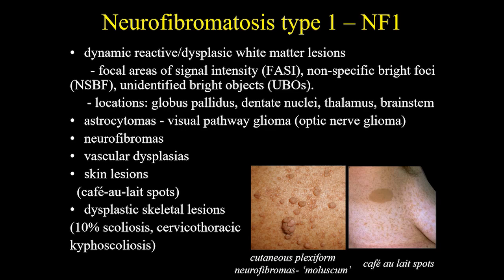There are dynamically reactive dysplastic white matter lesions characterized by focal areas of signal intensity and non-specific bright foci. They are located in the globus pallidus, dentate nuclei, thalamus, and brain stem. Astrocytomas are most likely in the visual pathway gliomas. Neurofibromas, like you can see here in this picture. Vascular dysplasia and skin lesions — the most classic one is the café au lait spot, that can be seen here also.